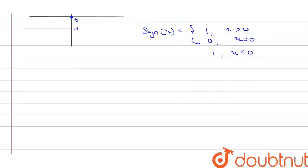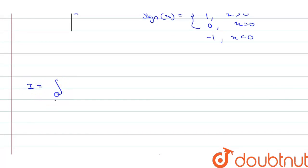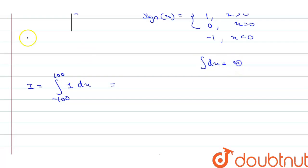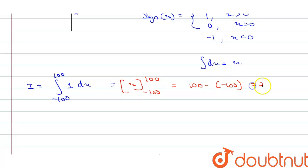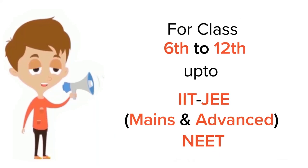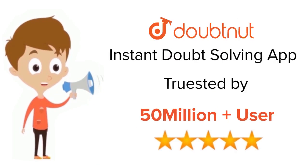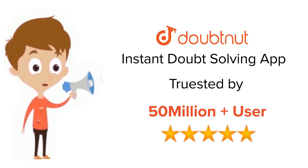So from here we can say that I equals the integral from minus 100 to 100 of 1 dx. The integration of dx equals x, so this equals x evaluated from minus 100 to 100, which equals 100 minus (minus 100), which equals 200. So this is the answer. For class 6 to 12, IIT and NEET level, trusted by more than 5 crore students — download the Doubtnut app today.